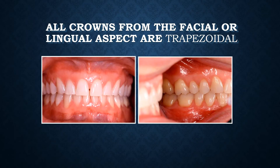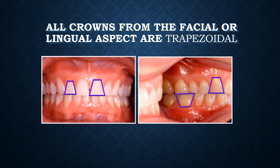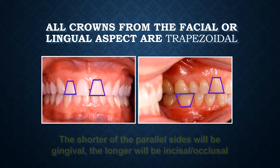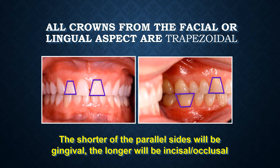All crowns from the facial or lingual aspect are trapezoidal. A general rule is that all teeth — whether from the facial aspect, the lingual aspect, whether they are incisors or molars — they all resemble a trapezoid. The shorter of the parallel sides is placed gingivally, while the longer side is incisal or occlusal.